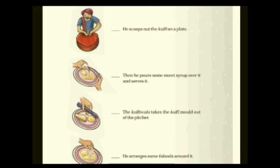Next activity: have you ever eaten kulfi, the ice cream from North India? A few sentences describe how it is served but they are not in the correct order — write the correct number before each sentence. There are four sentences: he scoops out the kulfi on a plate; then he pours some sweet syrup over it and sells it; the kulfi vala takes the kulfi mold out of the freezer; he arranges some faluda around it.